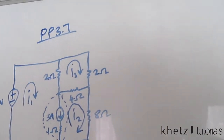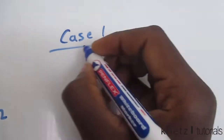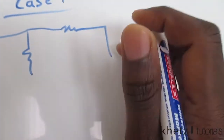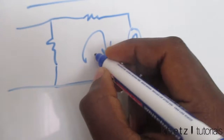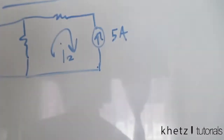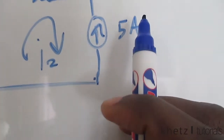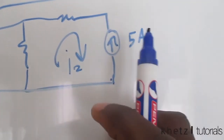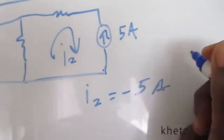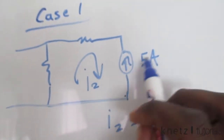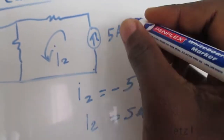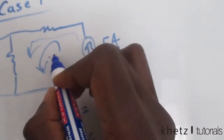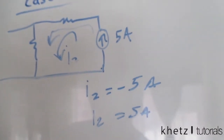This practice problem is under section 3.5 which talks about mesh analysis with current sources. Case one is where you have a current source and a mesh current. Since this current source is not shared with any other meshes, we can simply say i2 equals negative five amperes because it opposes the direction of that five amperes. If it were in the same direction, i2 would equal positive five amperes.